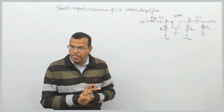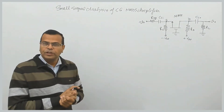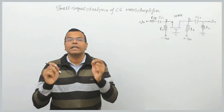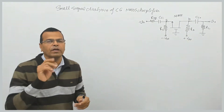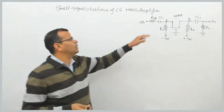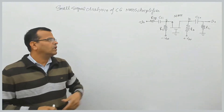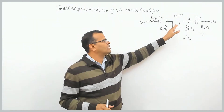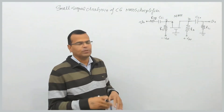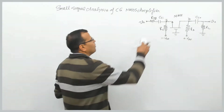The procedure here will remain the same as for common source configurations. First, replace all DC biasing signals by ground. Second, replace both coupling capacitors — the input coupling capacitor CCI and the output coupling capacitor — by short circuits. Third, replace the MOSFET by its small signal model. These are the steps to draw the small signal equivalent circuit of the common gate amplifier.